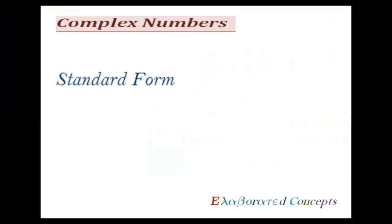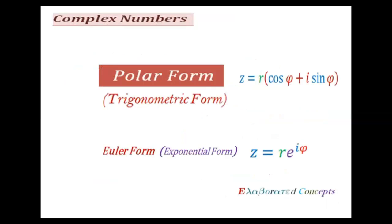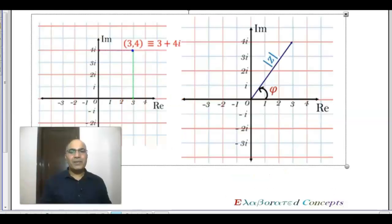Most of the time, we come across complex numbers in the form Z equals A plus B iota. However, there are alternate forms which are very useful at times. It is normally much easier to multiply, divide, and find powers or roots of complex numbers if they are expressed in these forms. Hello everyone, my name is Arun Khashish. In this video, we find ways to represent complex numbers in polar form, geometrically as well as analytically.